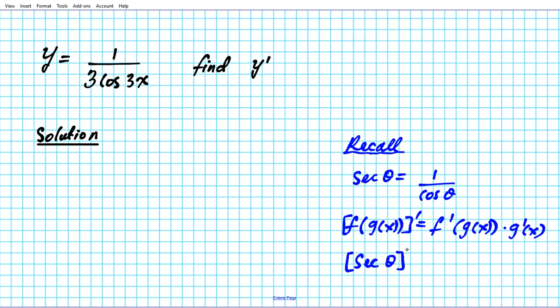Okay, all right, so let's go ahead and attack the problem. We have y equals 1 over 3 cosine 3x. Now your initial reaction or instinct or approach might be to apply the quotient rule to this particular scenario.